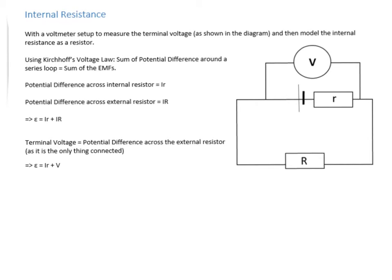Using Kirchhoff's voltage law in a series circuit: the sum of potential differences around a series loop is equal to the sum of the EMF. So the EMF is just the EMF from your power source. The sum of potential differences includes a potential drop across the internal resistor — that would be I times little r — and a potential drop across the big resistor, which would be I times big R. And you get this equation, which we use when dealing with EMF and internal resistance.